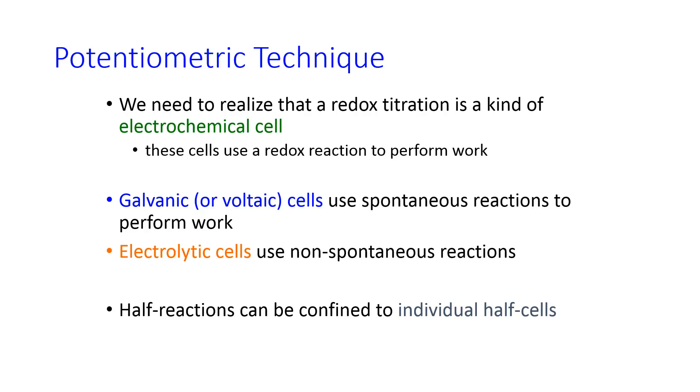A redox titration is a kind of electrochemical cell, which is a cell that uses a redox reaction to perform work. And there are two classes of electrochemical cells. The difference is whether the reactions are spontaneous or not. The half-reactions can be combined to individual half-cells to make a traditional electrochemical cell diagram, or they can happen in the same beaker, which is what we're going to do when we do redox titrations.